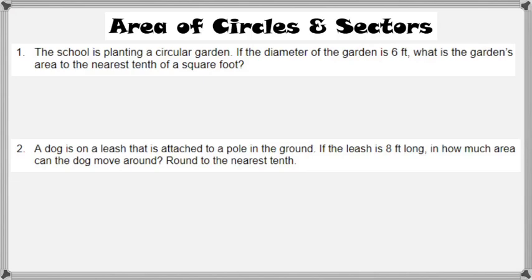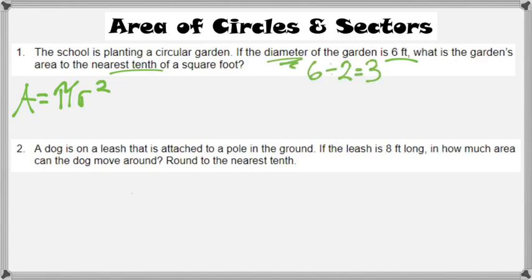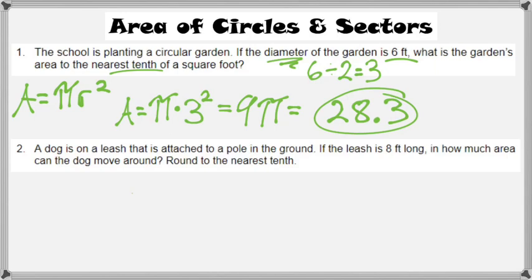The area of circles and sectors: a school is planting a circular garden with a diameter of six feet. What is the garden's area to the nearest tenth of a square foot? The area of a circle is pi times the radius squared. If the diameter is six feet, the radius is three feet. So the area is 3 squared times pi, which is 9 pi, or approximately 28.3 square feet.